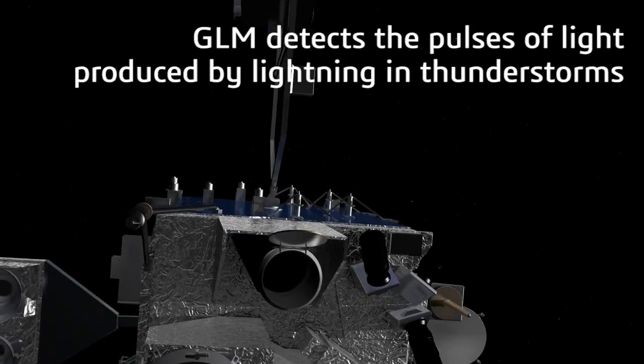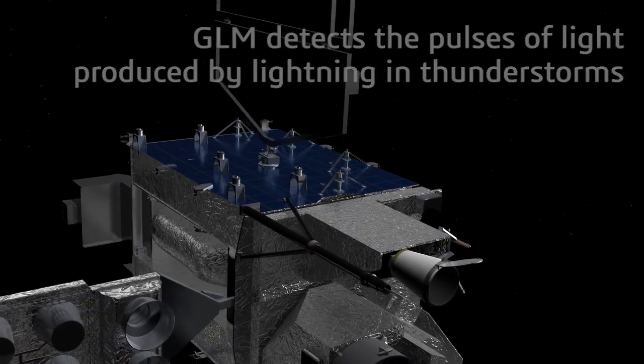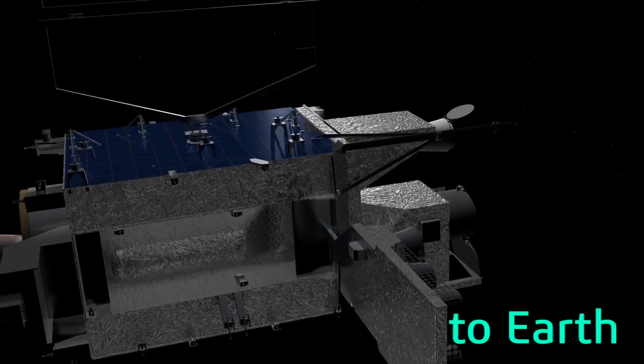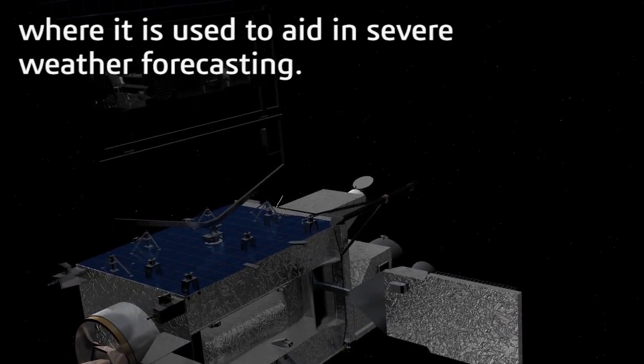GLM detects the pulses of light produced by lightning in thunderstorms and reports the brightness and geolocation of the lightning to Earth, where it is used to aid in severe weather forecasting.